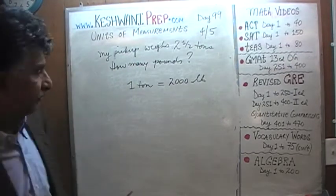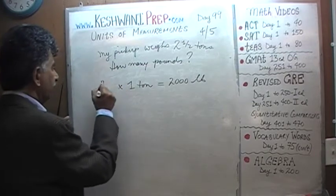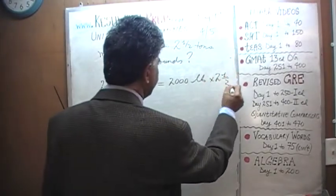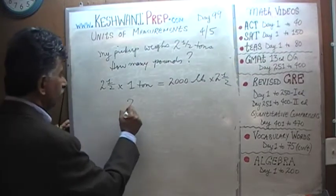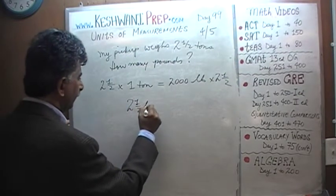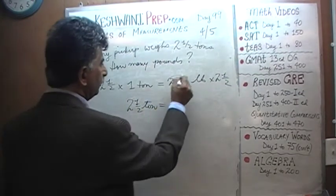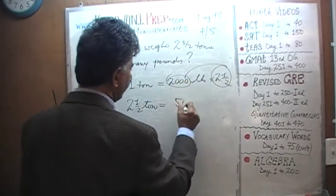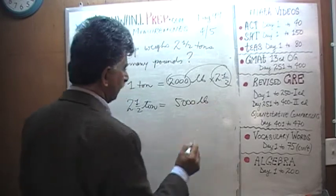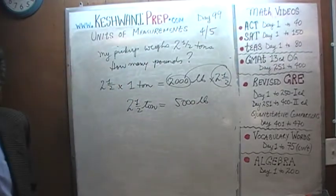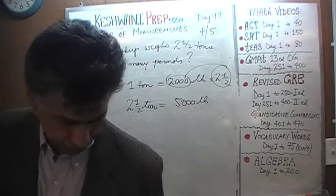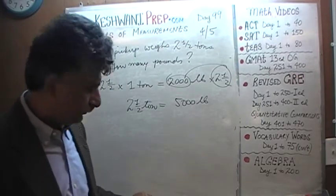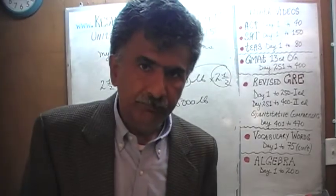That makes life quite straightforward. Multiply both sides by two and a half. Two and a half tons would equal two thousand times two and a half. Two and a half times two is five, so it's five thousand pounds. Five thousand pounds make two and a half tons. The truck weighs five thousand pounds. I'll see you tomorrow — bye now.